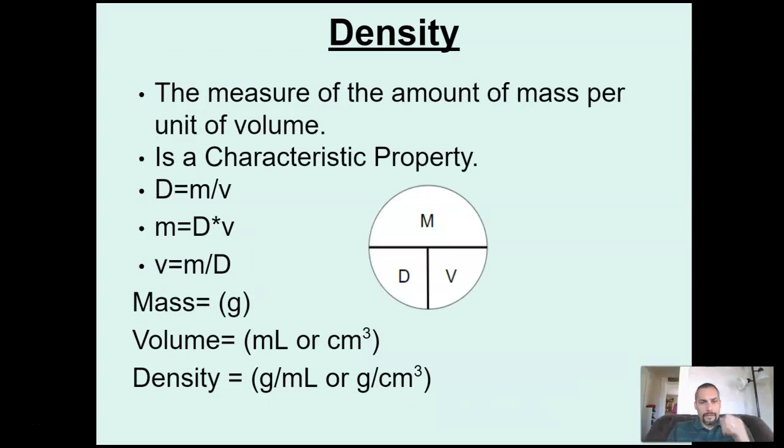Getting into our specifics here, density is the big characteristic property that we've talked about so far. It's a measure of the amount of mass per unit of volume. So usually it's in either grams per milliliter or grams per cubic centimeter, depending on what we measured our volume with.